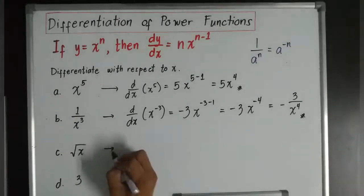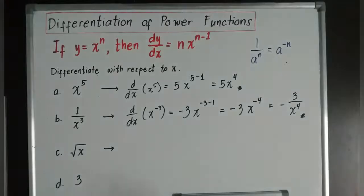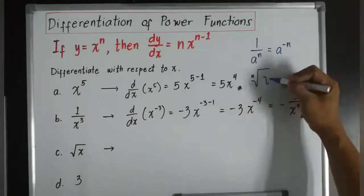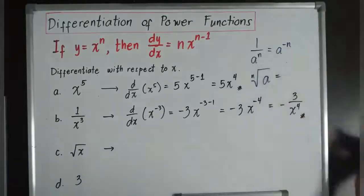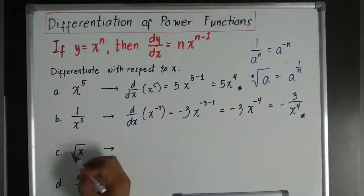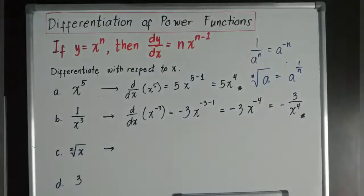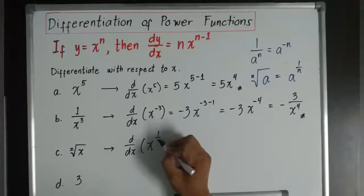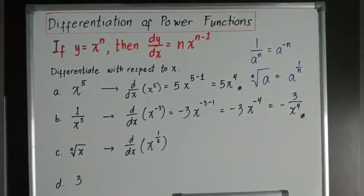How about this one? Remember, square root of x. There's another law. It says n root of a is always equivalent to a to the power of 1 over n. And remember, even if I don't put any number here, this is equivalent to 2. The n there is always 2. Now, this will become d over dx of x to the power of 1 over 2.